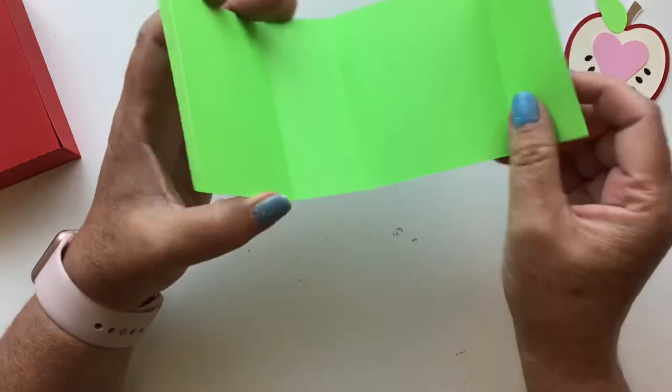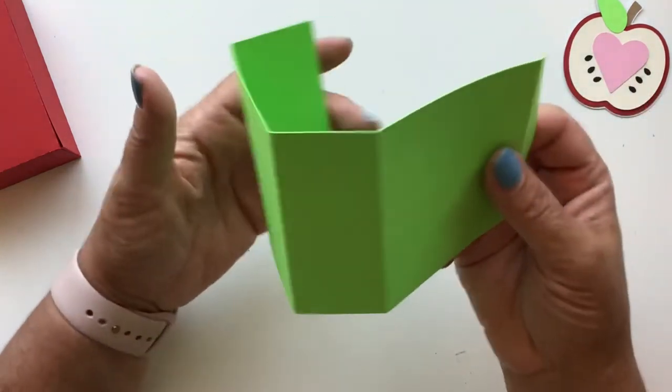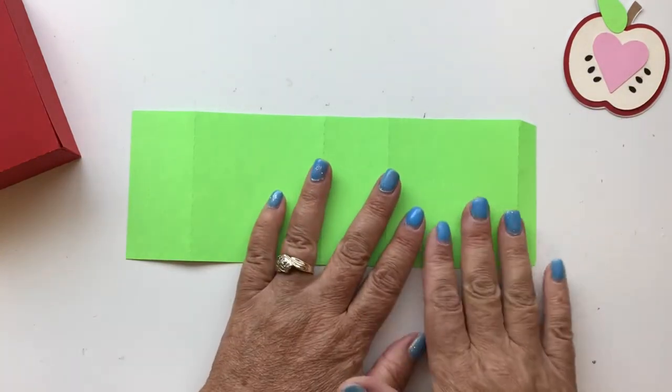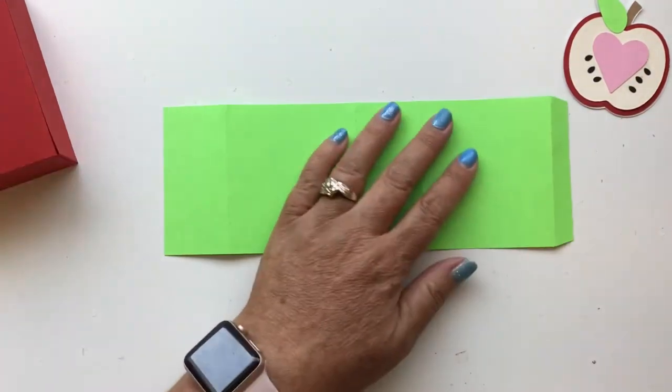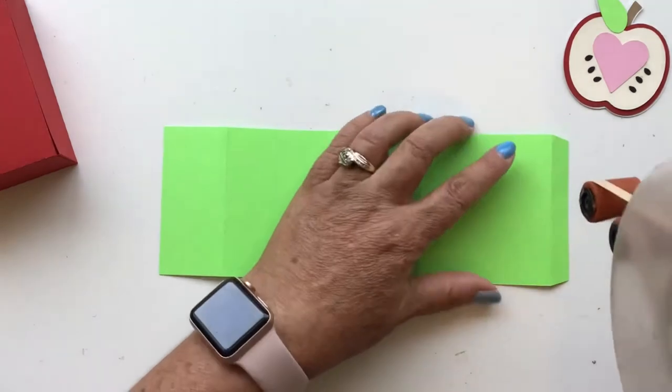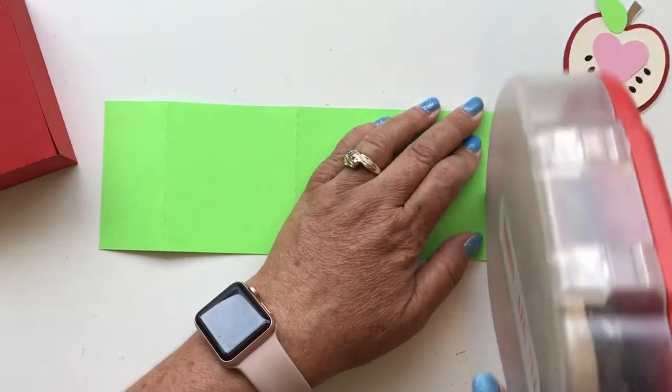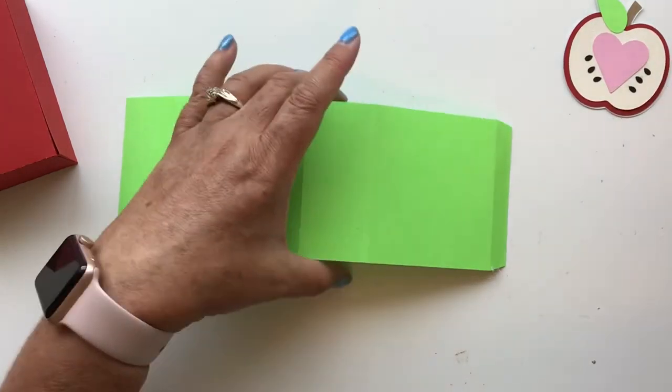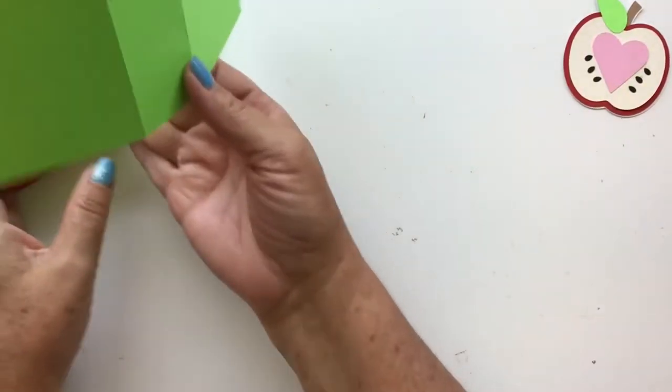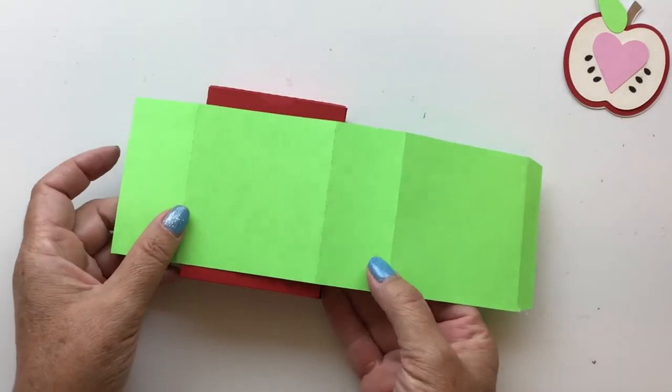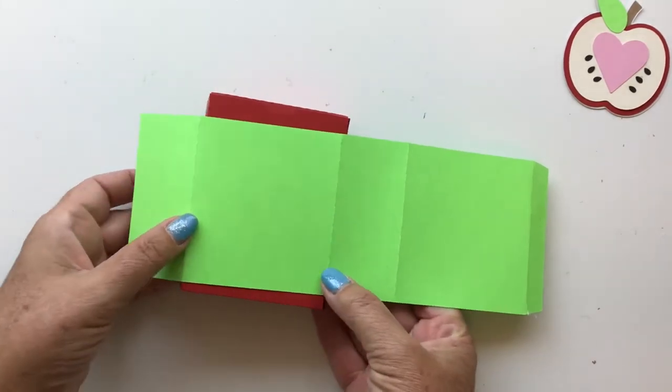This is another really quick project. I love the quick projects because there's so much you can do with them that you don't have to take a lot of time making them. You get to decorate them using your printed paper and your pattern paper, cardstock, whatever you want. Once we have all those folded, we're going to go ahead and put tape on this tab.